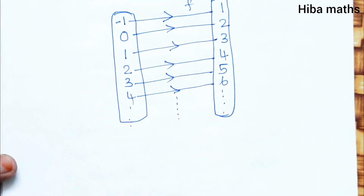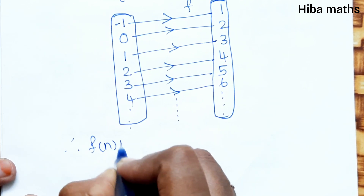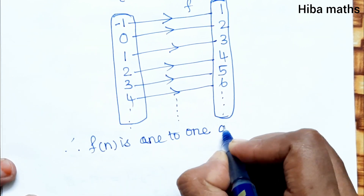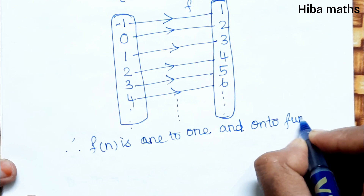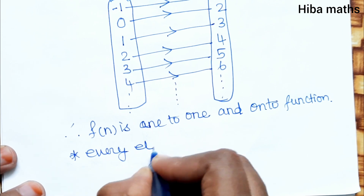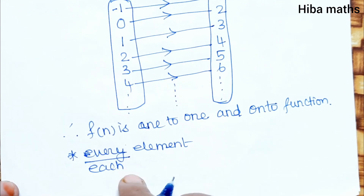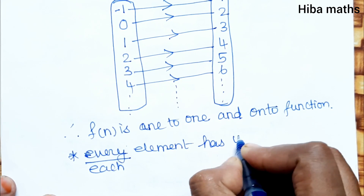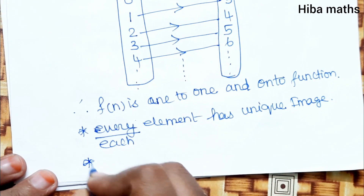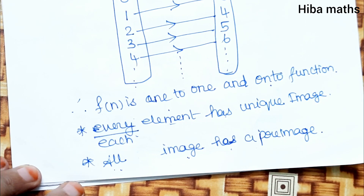So this function is one-to-one and onto. Every element has a unique image, so it is one-to-one. All images have a pre-image, so it is onto. Therefore, f(n) is a one-to-one and onto function. Thank you so much for watching.